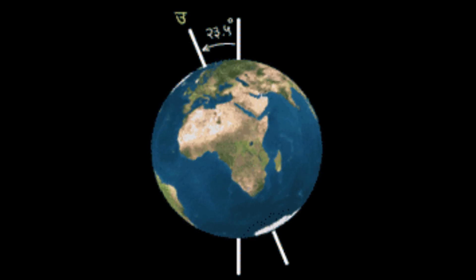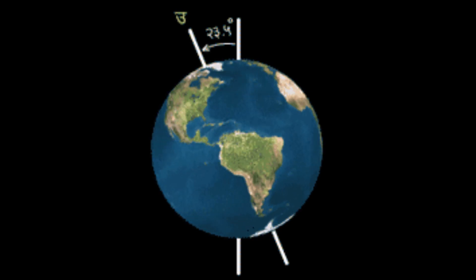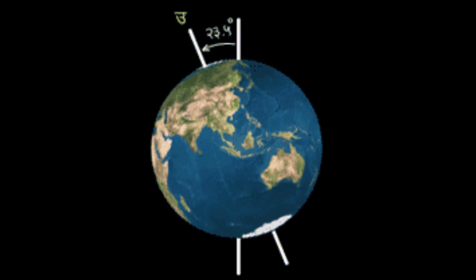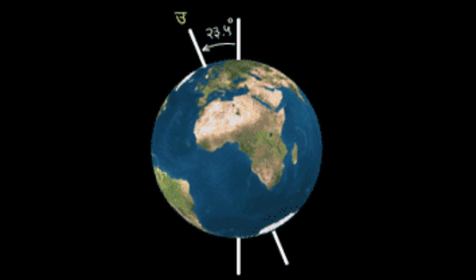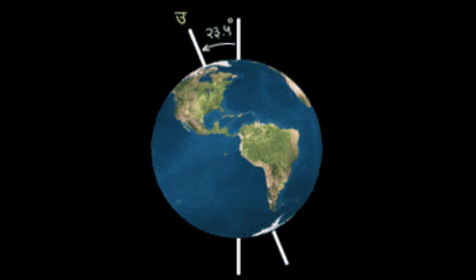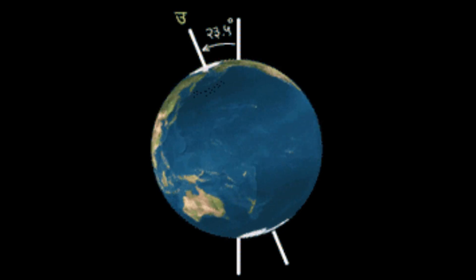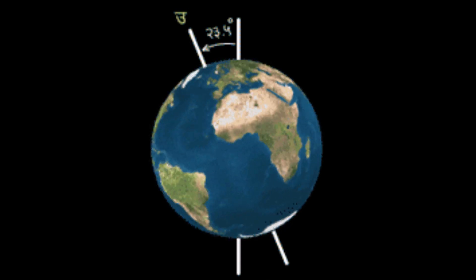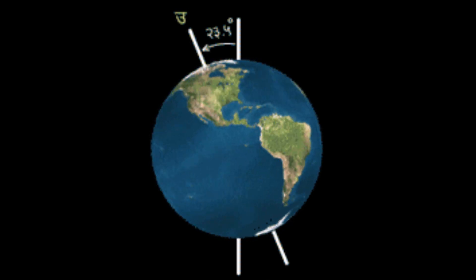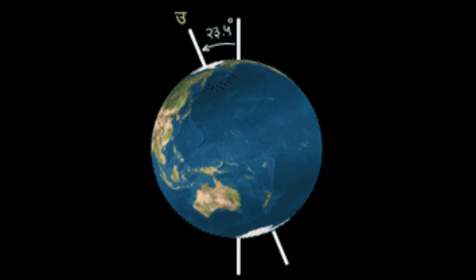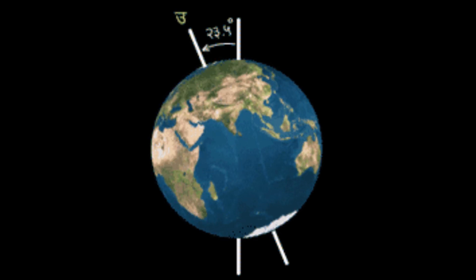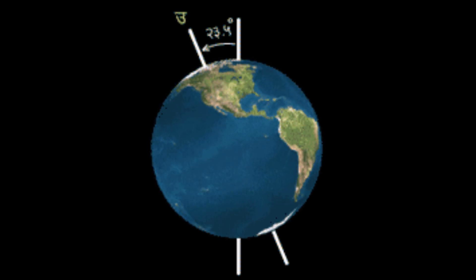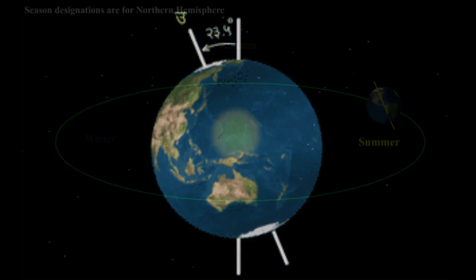Sometimes the northern hemisphere is aimed more directly towards the sun, sometimes the southern, sometimes it's equal — and that's what we call the equinox. They occur in the spring and in the fall or autumn.